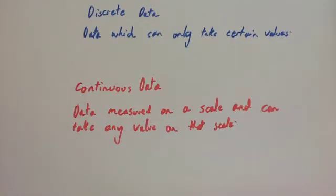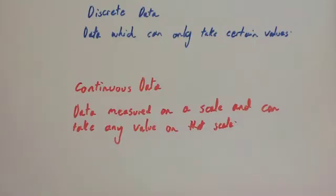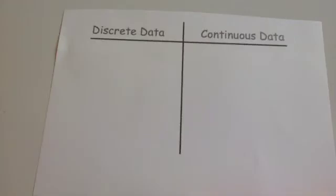An interesting one that people talk about is money. Money itself — currency — is a discrete value; it can only take certain values. Whereas the value of something, say for instance stocks and shares, you can give something a value that would be continuous.